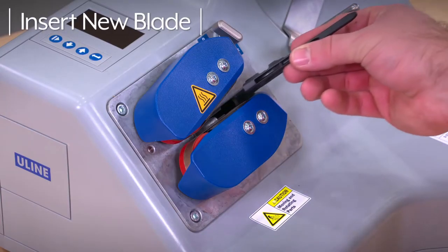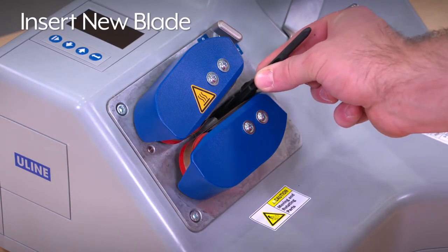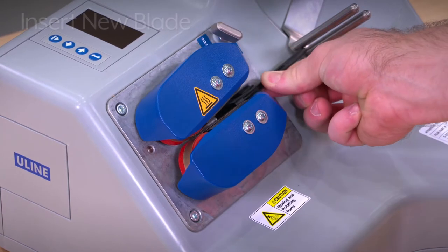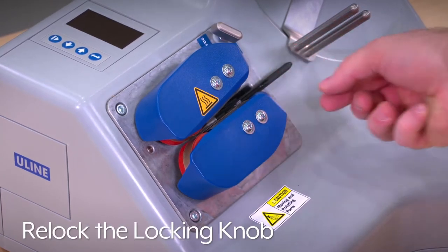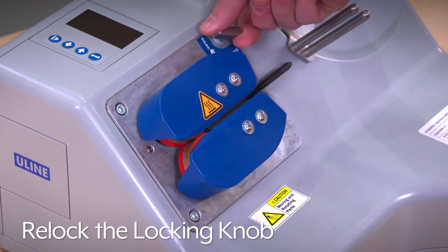Take a new blade and with it angled down, insert it until it snaps into place. Turn the locking knob to re-lock the top sealing unit back into place.